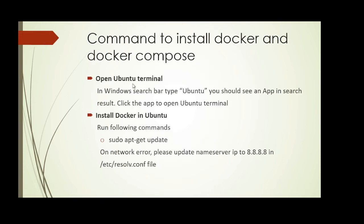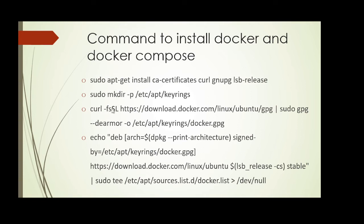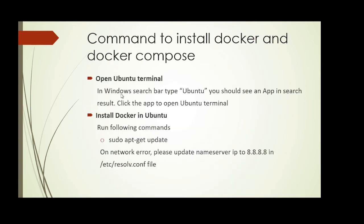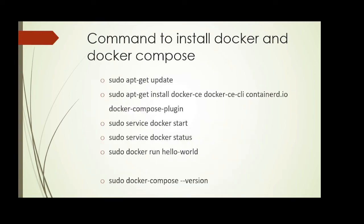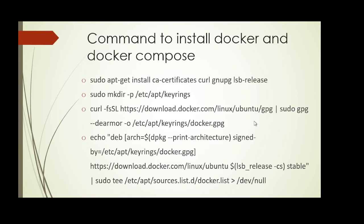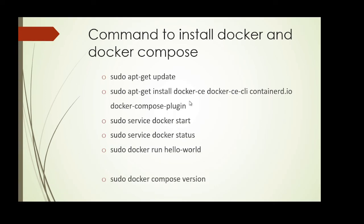We have successfully installed Ubuntu. In the Windows search bar, type Ubuntu and it should appear in the App category. Click it to open the Ubuntu terminal. Once open, to install Docker, follow these commands — taken from Docker's official website for installing on Ubuntu. In case of a network error while running apt-get update, update the nameserver IP to 8.8.8.8 in the /etc/resolv.conf file. To summarize: we add Docker's GPG key, set up the repository, then install Docker Engine, Docker CLI, and Docker Compose using the apt-get install command.